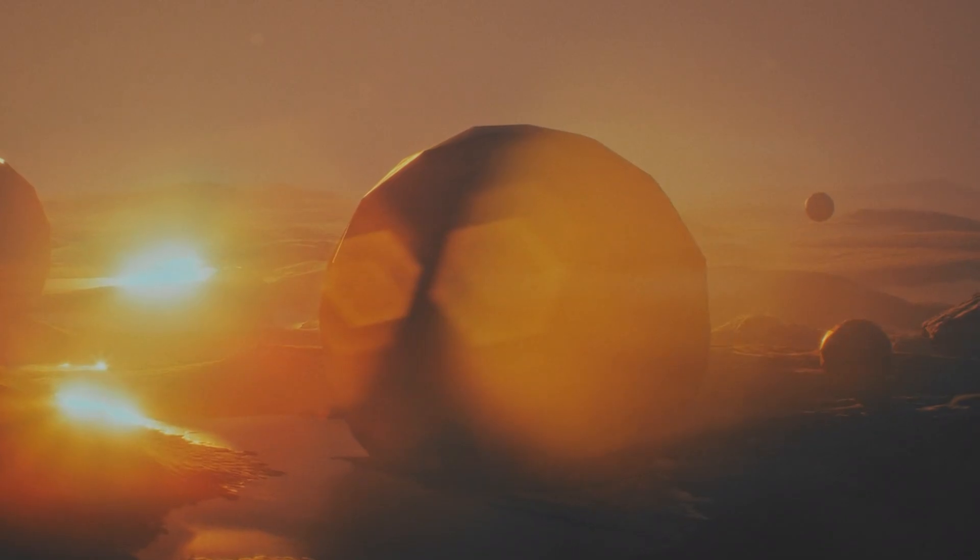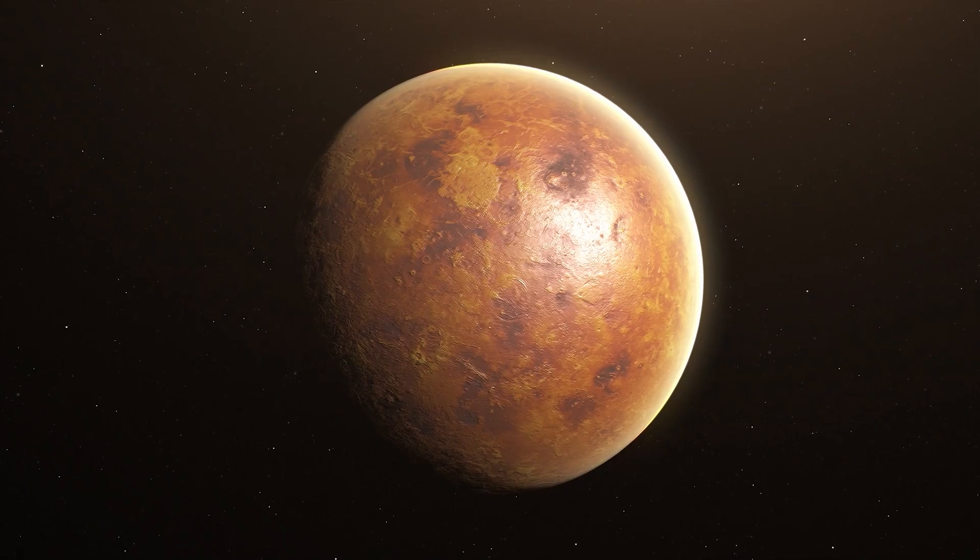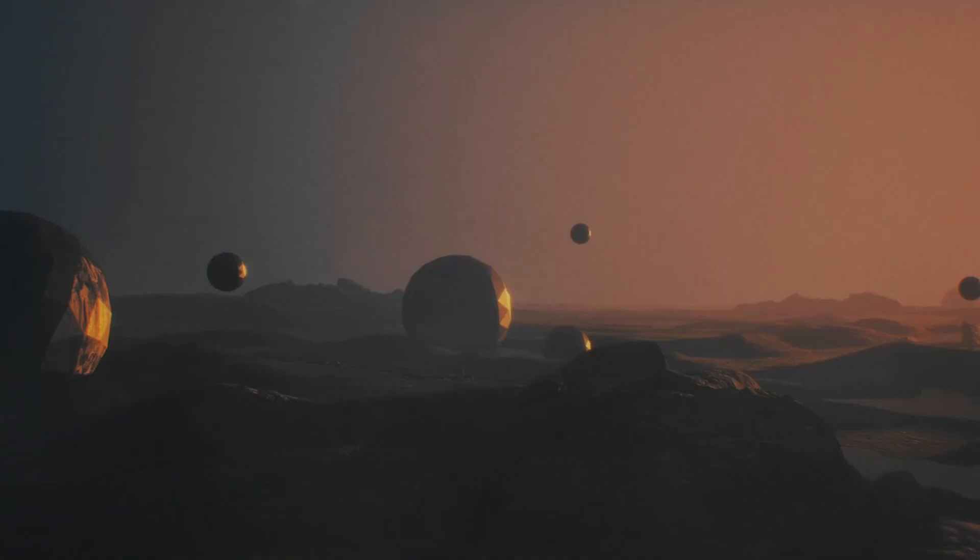Meteoroid Striking Mars. For the first time, the surface of Mars was struck by a meteoroid. The space rock which entered Mars' atmosphere on the 5th of September 2021, broke into at least three pieces, creating craters.